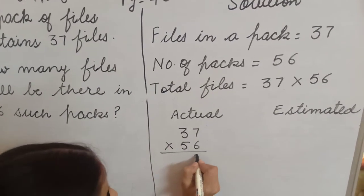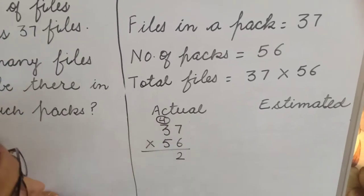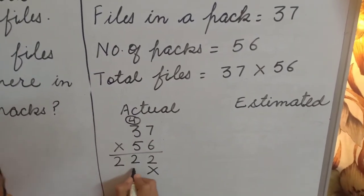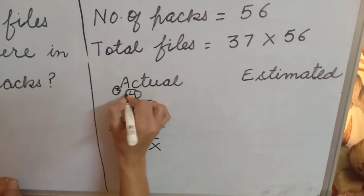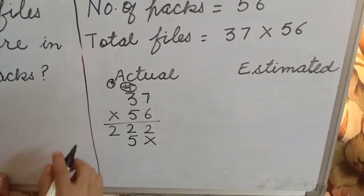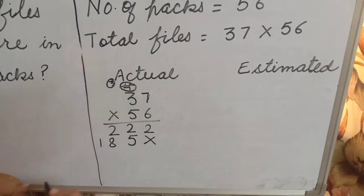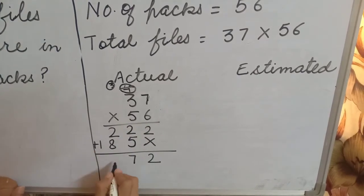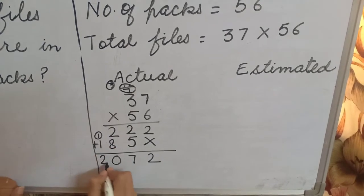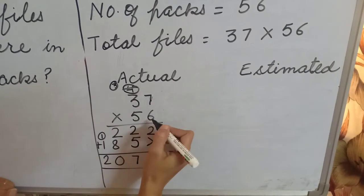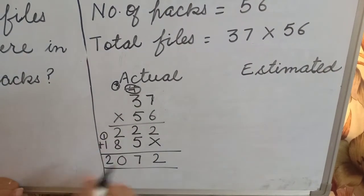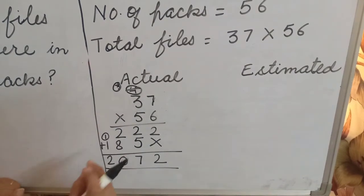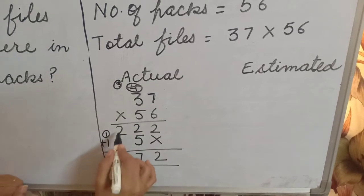6 times 7 is 42, 4 carry. 6 times 3 is 18, 18 plus 4 is 22. 5 times 7 is 35. 5 times 3 is 15, 15 plus 3 is 18. 5 plus 2 is 7, 8 plus 2 is 10, 1 plus 1 is 2. So 2,072.